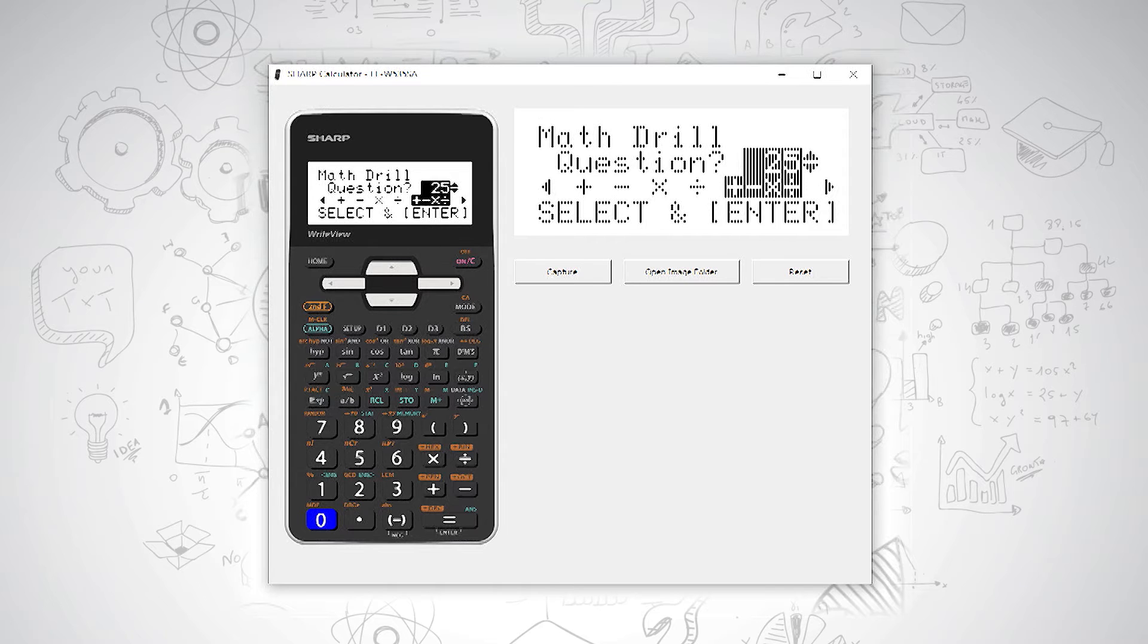To choose how many questions you want to do, you can use the up or down arrow keys. So you have 25, 50 or 100 questions.